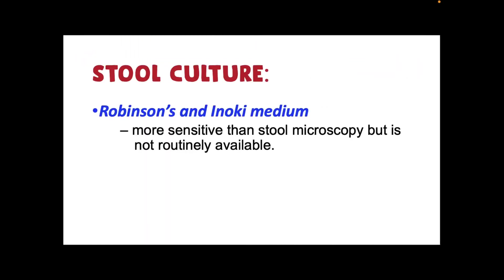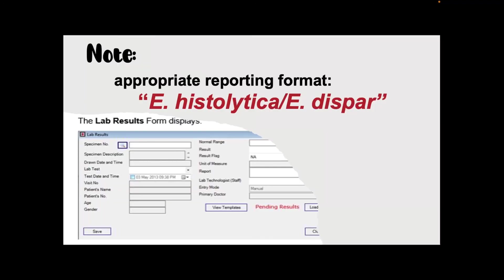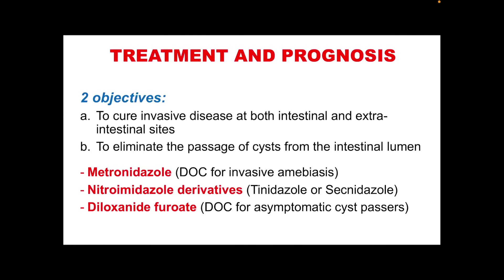Stool culture using Robinson's and Inoki medium can also be used for the isolation of Entamoeba species — it is more sensitive than usual stool microscopy, but not routinely available. Differentiation of E. histolytica from E. dispar is not possible by microscopy and can only be done through PCR, ELISA, or isoenzyme analysis. Laboratories relying exclusively on morphologic analysis must use the reporting format: E. histolytica/dispar.